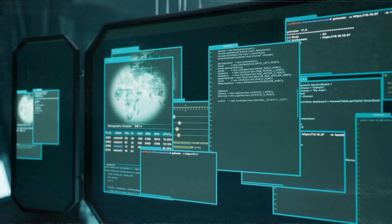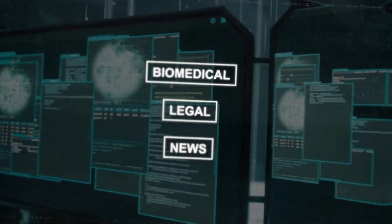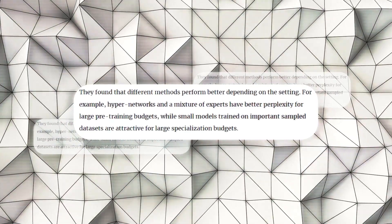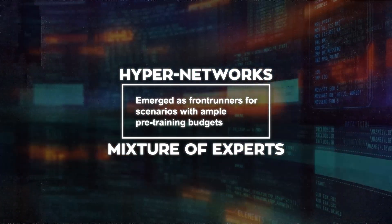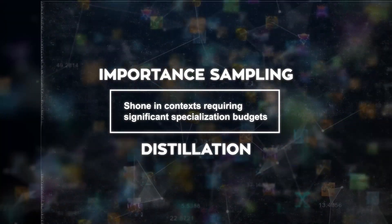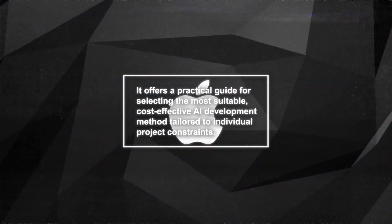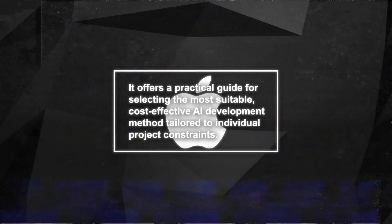Apple's researchers didn't just stop with these methodologies — they put them to the test across various domains, such as biomedical, legal, and news, under different budget scenarios. Their findings revealed that the effectiveness of each method varies depending on the specific needs and available resources of the project. Hypernetworks and mixtures of experts emerged as front-runners for scenarios with ample pre-training budgets, whereas importance sampling and distillation shone in contexts requiring significant specialization budgets. This exploration offers a practical guide for selecting the most suitable, cost-effective AI development method tailored to individual project constraints.